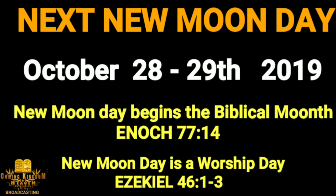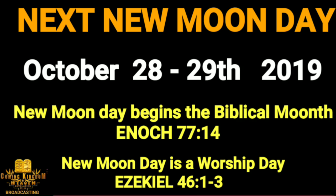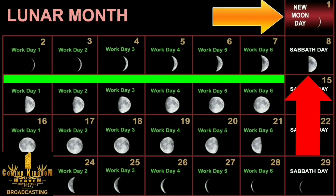If you see the first crescent that evening, that means you have a one-day new moon. Then the next day you go about your walk — you work for six days and then rest on the seventh day, keeping your Sabbath.